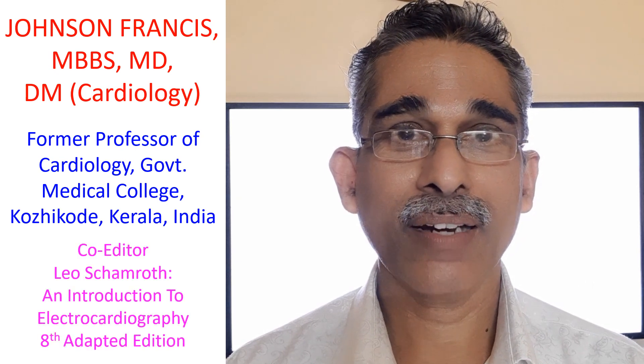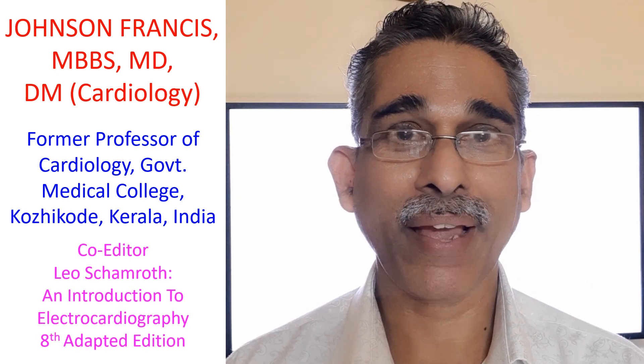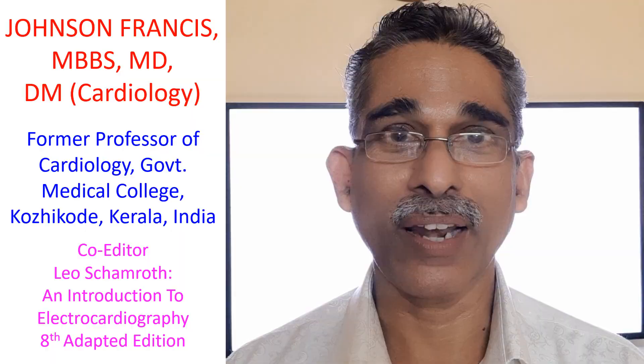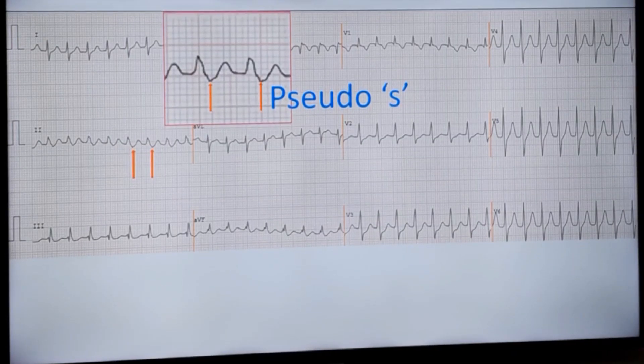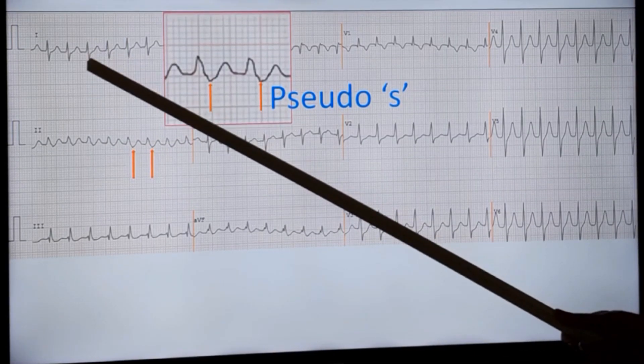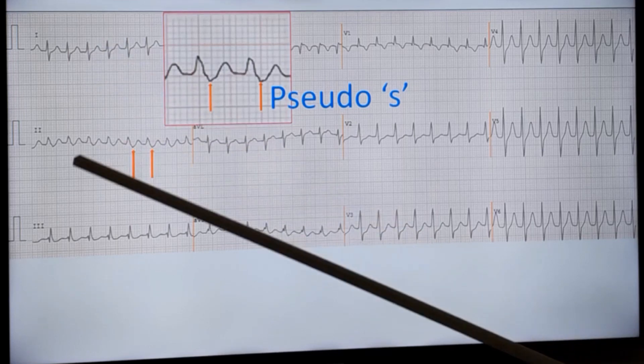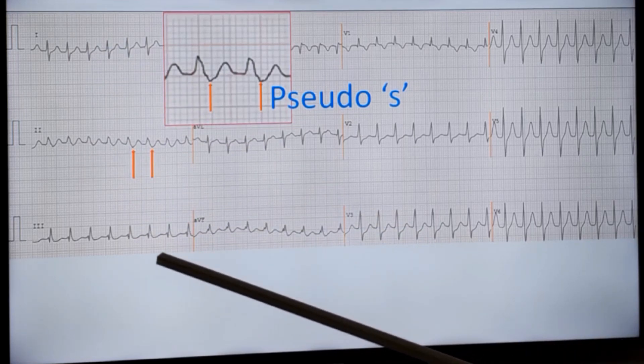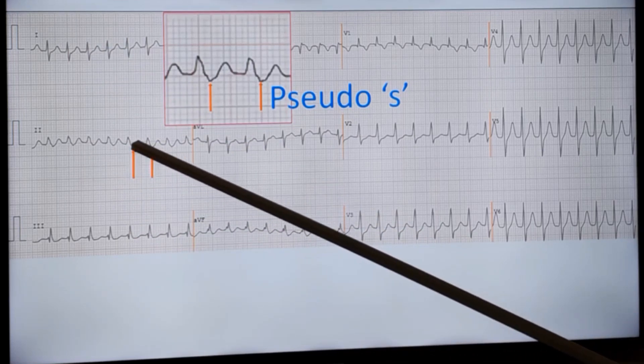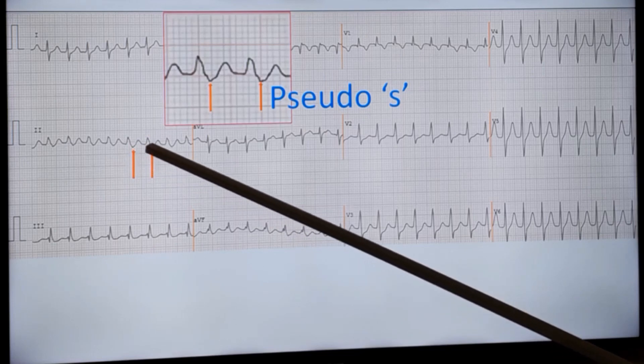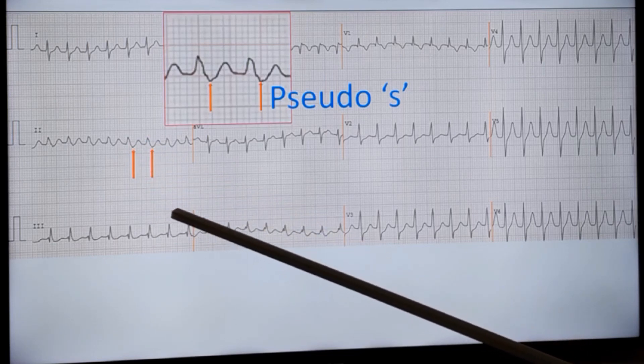Earlier we had discussed a wide QRS tachycardia. Now we will discuss a narrow QRS tachycardia occurring at a rate of about 180 per minute and see what is the possible mechanism of the tachycardia as well. Have a look at this ECG. At first glance there are no P-waves seen, but if you carefully look there are retrograde P-waves after the QRS complex.